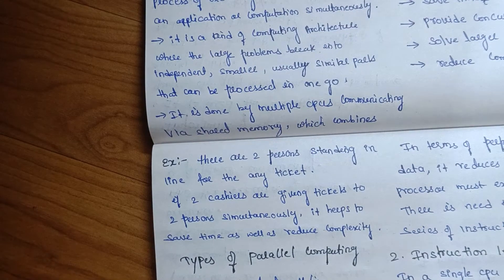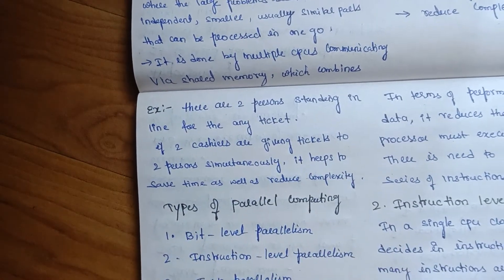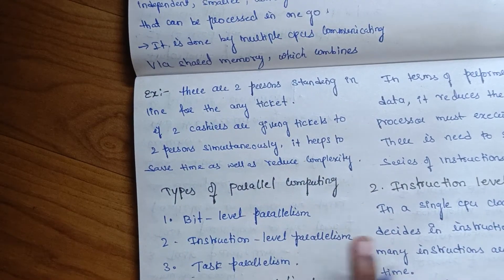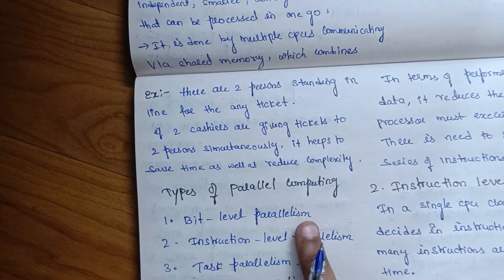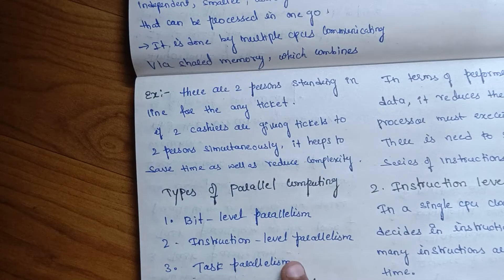There are three types of parallel computing: bit-level parallelism, instruction-level parallelism, and task parallelism.